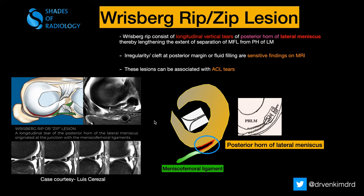Welcome back to Shades of Radiology. Today I am going to show you an interesting lesion: the Wrisberg rip or zip lesion. These Wrisberg rip or zip lesions are nothing but longitudinal vertical tears of the posterior horn of the lateral meniscus.